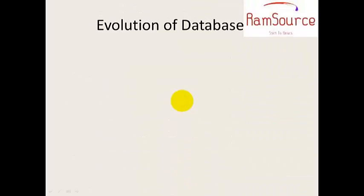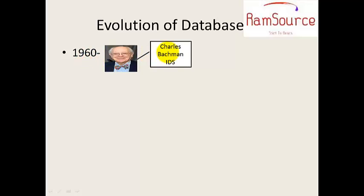Next is the evolution of a database — how did it evolve? Initially, in 1960, Charles Bachman created IDS — Integrated Data Store — which was the first concept of the database. Then in 1968, IBM introduced IMS — Information Management System.